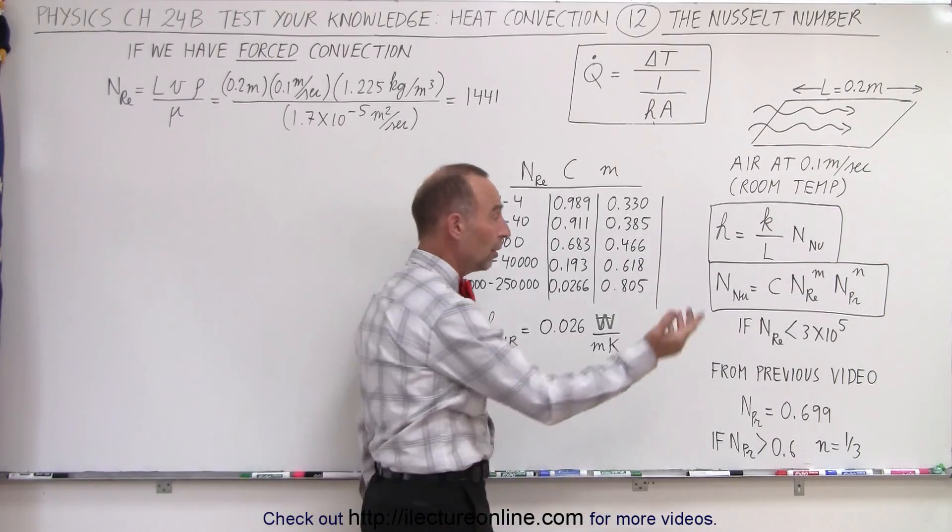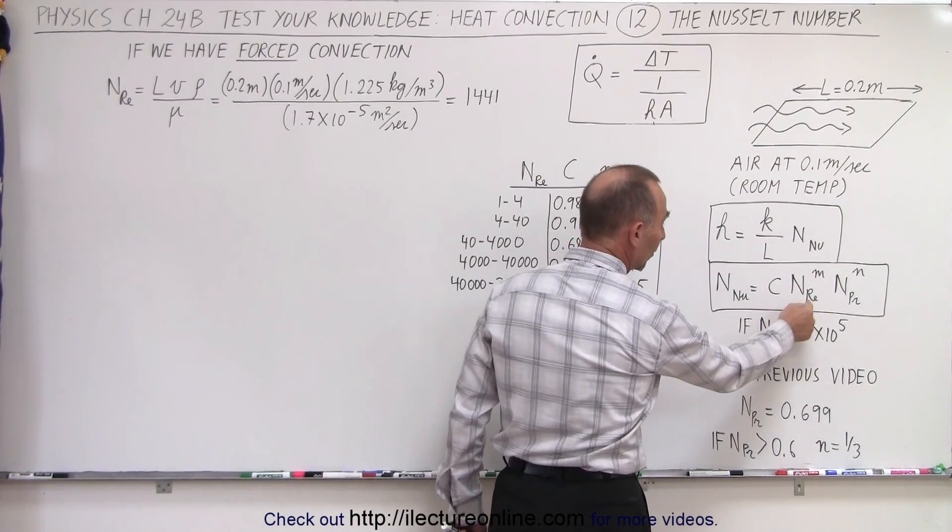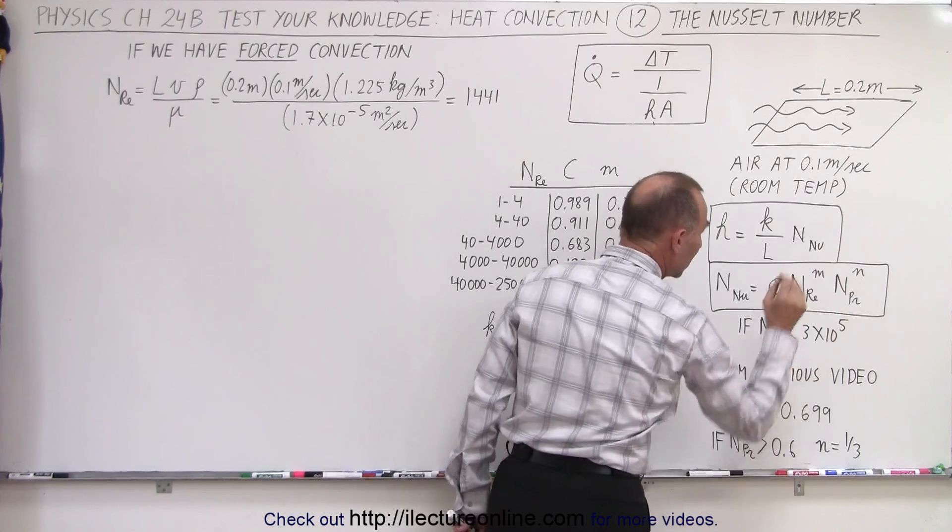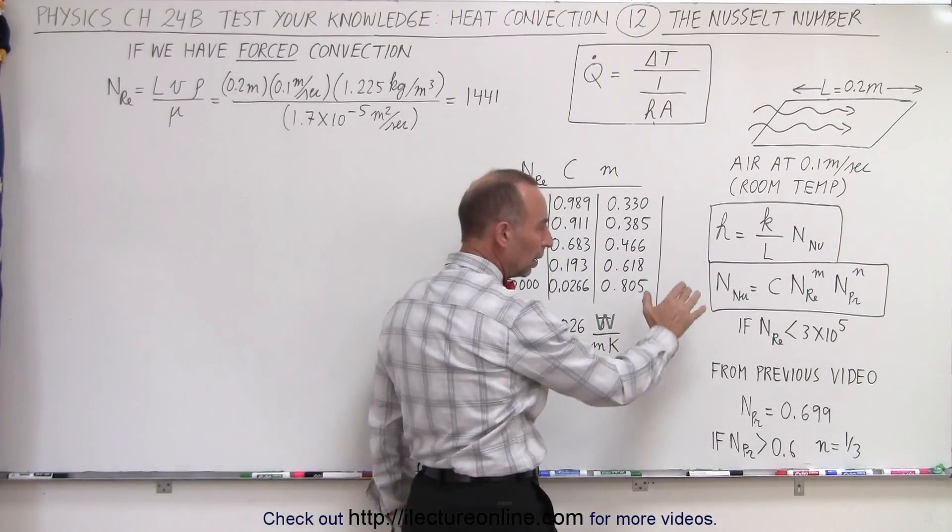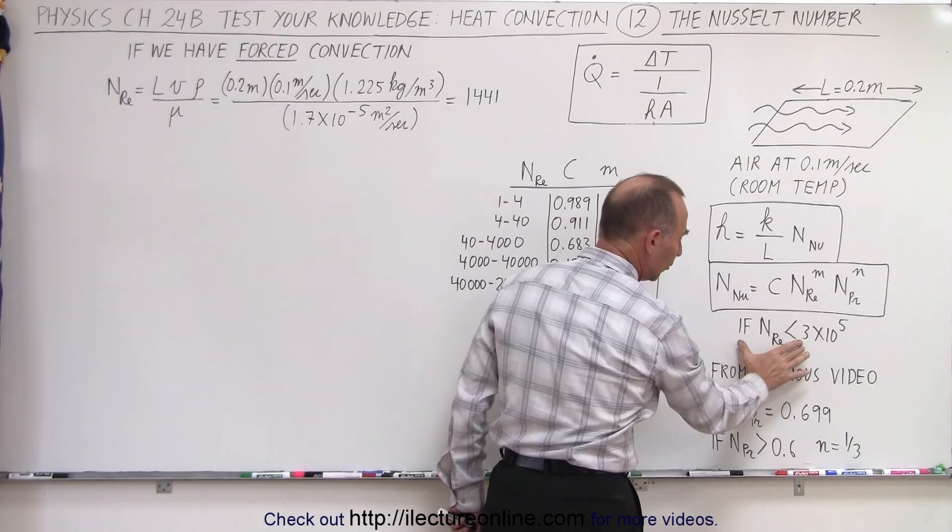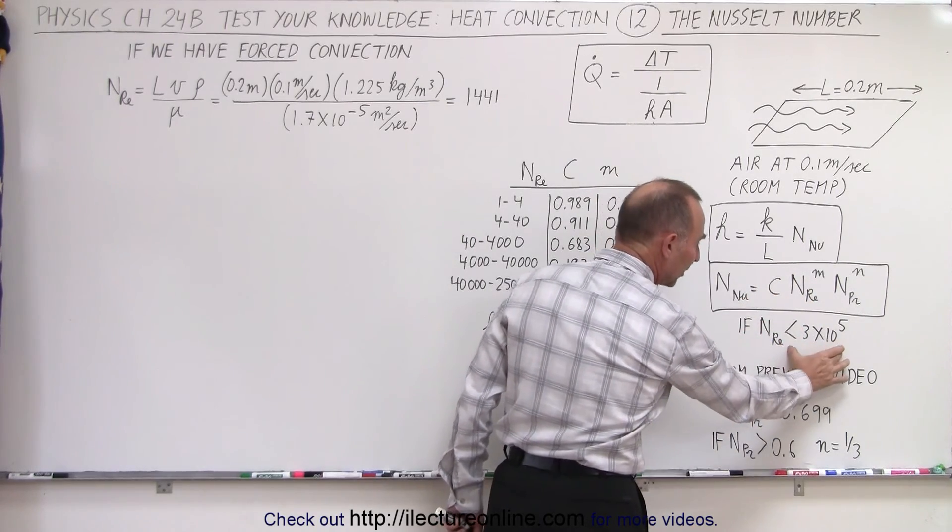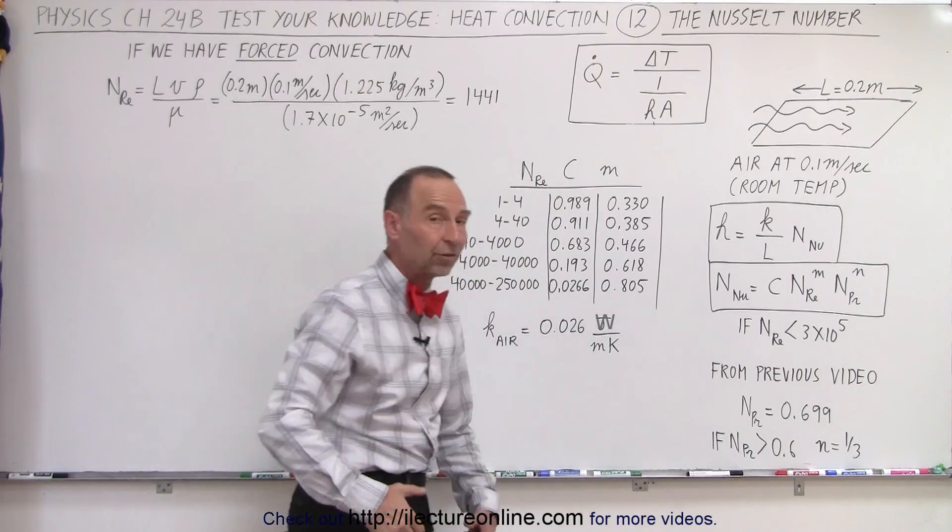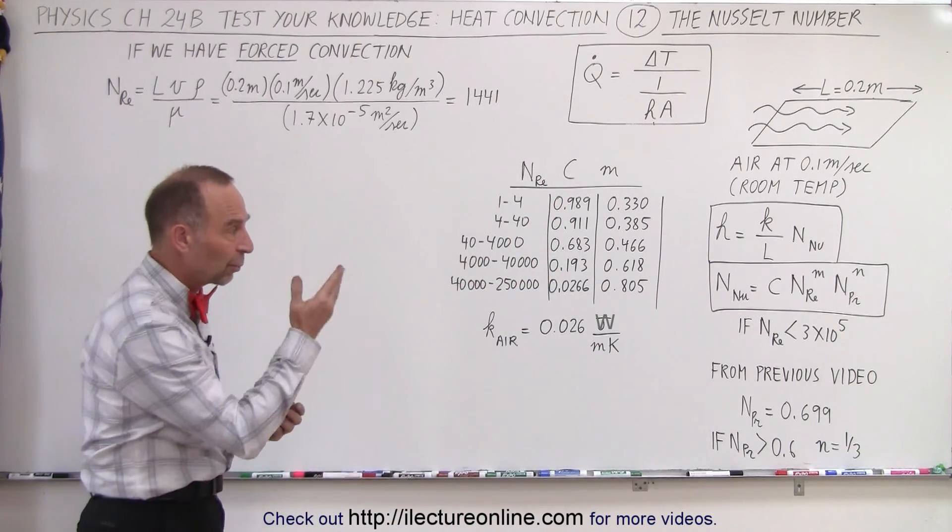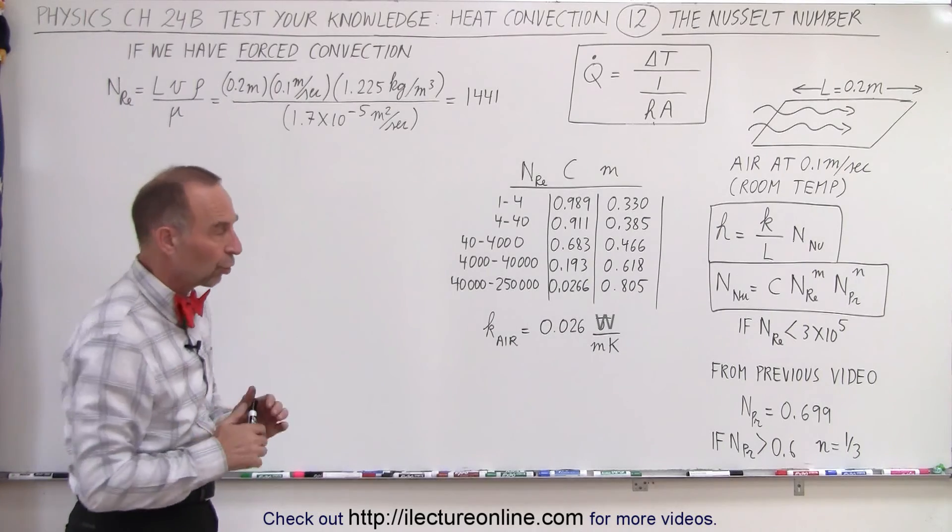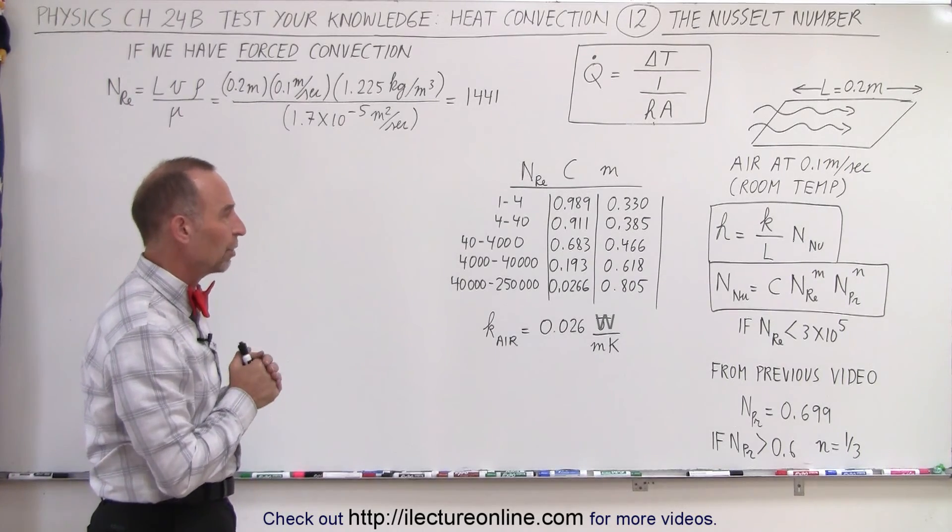Now beyond the Nusselt number we need to calculate the constant, the Reynolds number, the Prandtl number, and we need to know what those exponents are. So this equation right here is the correct equation provided that the Reynolds number remains below 300,000. Once the Reynolds number goes over 300,000 then the flow is such that we have to come up with a different equation and we'll show you that one. But let's start with this equation right here.